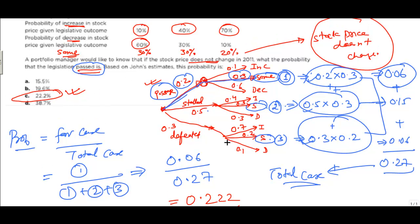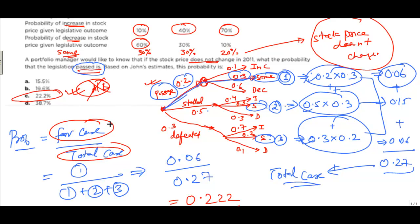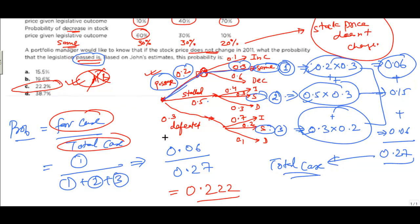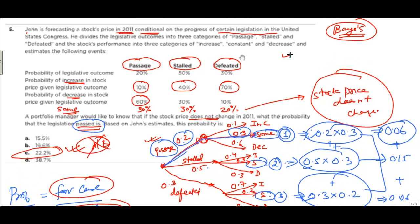If you draw this type of tree diagram, the problem becomes very simple. Probability is favorable case divided by total case — don't worry about complex conditional notation. I recommend solving Bayes' theorem problems this way. I do not know the original source of this question, so if there is any copyright violation please let me know and I will remove the video. Thank you.